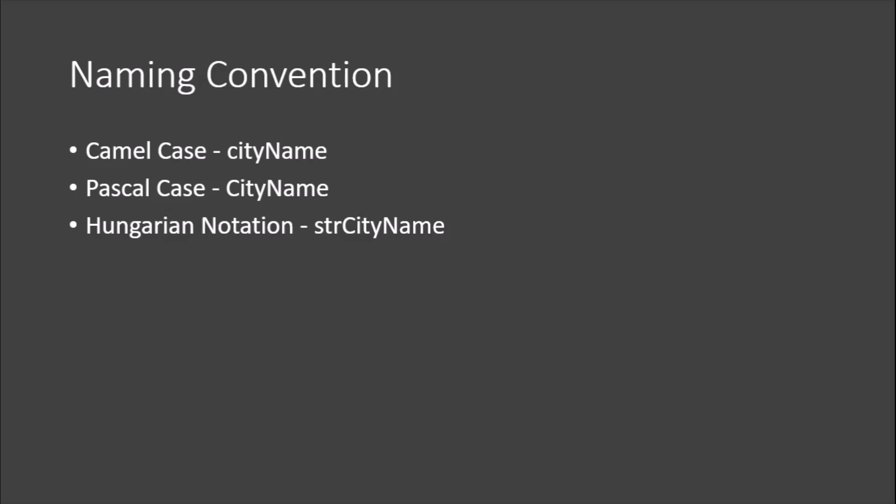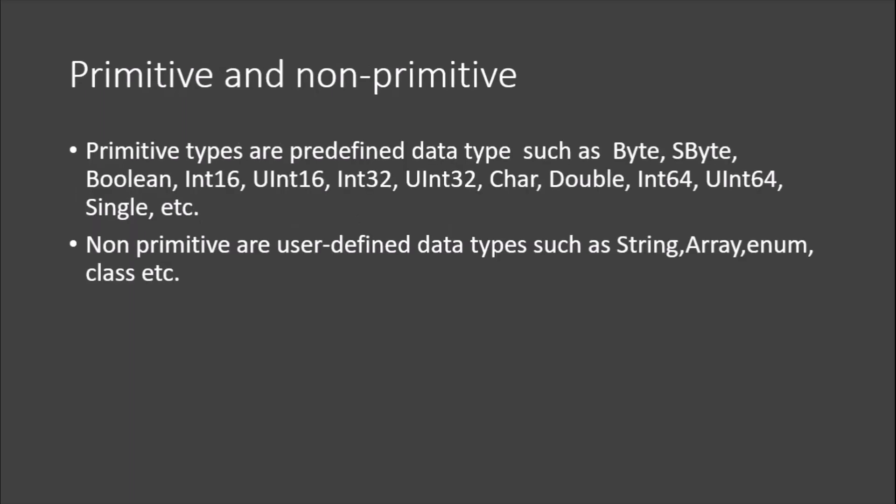We also have different naming conventions for how you name a variable. In camelCase, the first word starts with a small letter and the following words start with a capital letter. This is normally used to declare local variables. Hungarian notation is where you start with the data type followed by the name of the variable — this is the old way of naming and is not advisable to use.